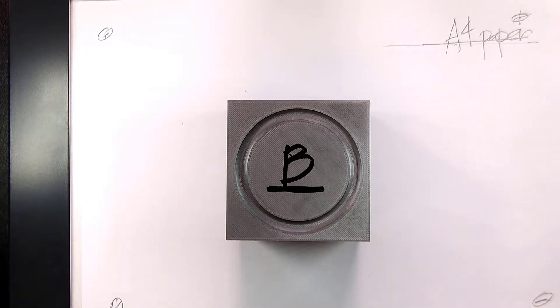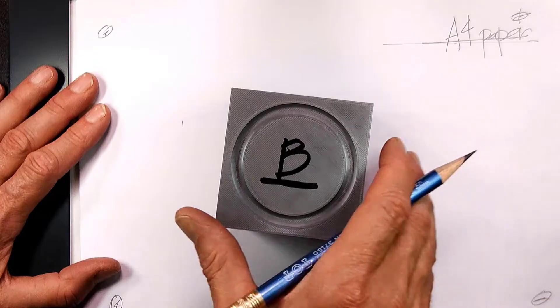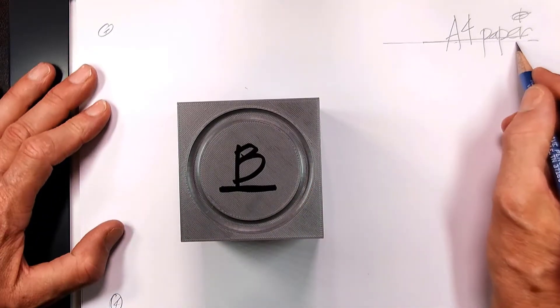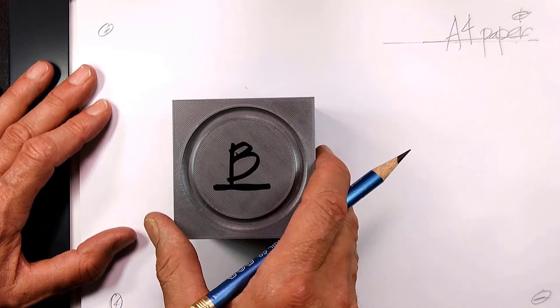I'm going to show you how to draw an orthographic. First of all, I'm using A4 paper, which is similar to eight and a half by eleven, and this is a cube.